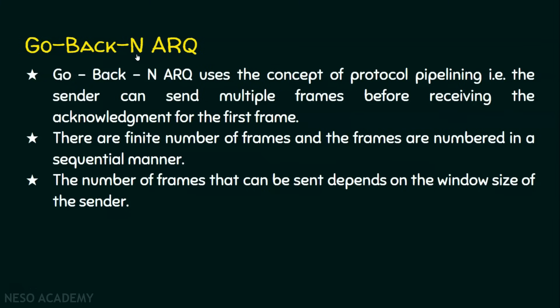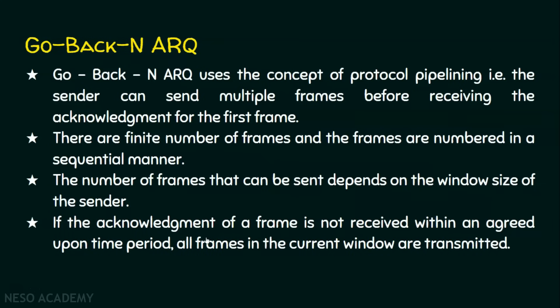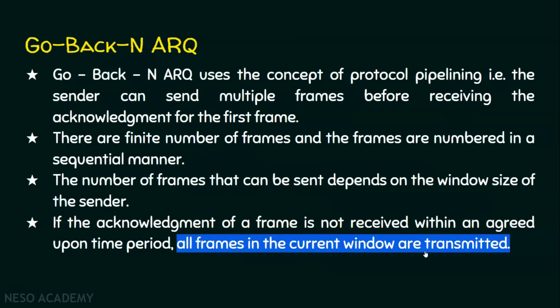What if the acknowledgement is not received on time? If the acknowledgement of a frame is not received within an agreed upon time period, all frames in the current window are retransmitted. For example, if we sent frame number 5 and didn't get the acknowledgement, and the current window holds three frames, all three frames are retransmitted. This is a very important point in Go-Back-N ARQ — all frames in the current window are retransmitted if the acknowledgement is not received in time.